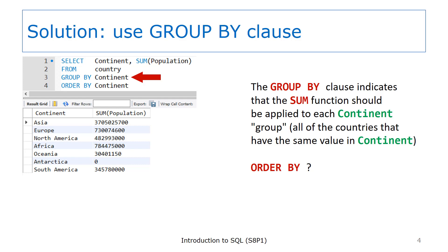This looks like it solves the problem — we now have continents listed and the total population for each continent. But what is going on here? We have an ORDER BY clause to sort the results in order by the continent name, but the results are clearly not in order by the continent name. If anything, the results appear to be in random order.